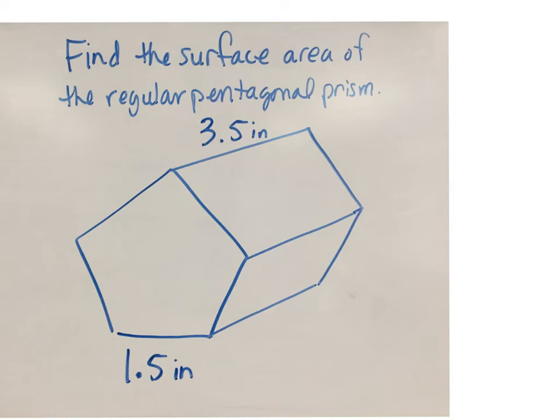We're finding the surface area of a regular pentagonal prism. We'll apply the formula for surface area, which is 2 times the base area plus the perimeter of the base times the height of the prism.